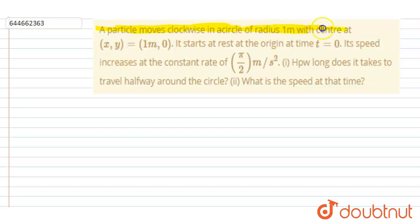in a circle of radius one meter with center at (1,0). It starts at the origin at t equals zero. Its speed increases at constant rate of pi by two meter per second square. How long it takes to travel halfway around the circle? What is the speed at that time? So to complete halfway, if you draw a circle like this, to complete this much, like to go from P to Q